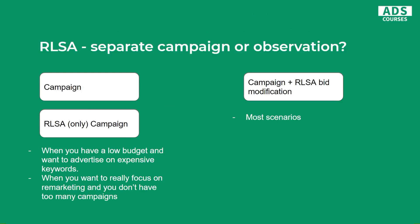Another point is RLSA. Should you split RLSA or not? In most scenarios, the answer is no — keep them as bid modifications inside your general campaign, because splitting them would double your campaign volume. But there are scenarios where you'd want a separate RLSA-only campaign: for example, when you have a low budget but want to advertise on expensive keywords, you couldn't afford to advertise to all audiences, but you can still target those broad or expensive keywords just for your remarketing lists. Another example is when you really want to focus on remarketing, you don't have too many campaigns, or your conversion funnel is long.